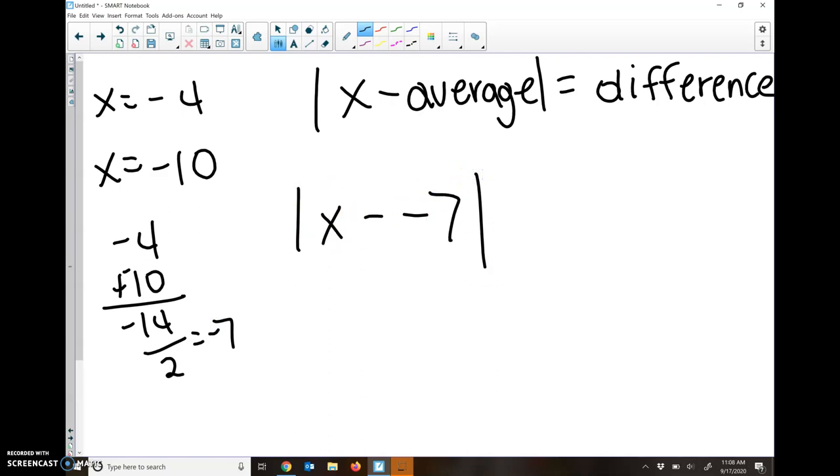Well, what happens with minus a negative? That's going to turn into a plus. So x plus 7. And now same thing. If I'm at negative 7 on a number line.